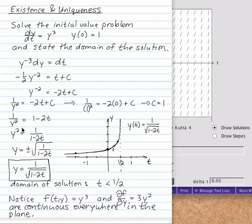Then I can divide both sides by 1 minus 2t. Multiply both sides by y squared. Eventually I get to y is plus or minus the square root of 1 over 1 minus 2t. I choose the positive because of the y value of the initial condition. And the numerator square root of 1 is just 1.